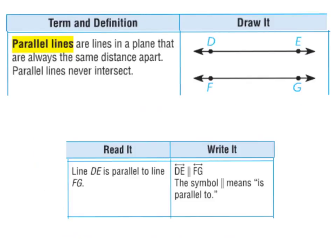The next term is parallel lines. Parallel lines are lines in a plane that are always the same distance apart. Parallel lines never intersect — they never cross. So line DE is parallel to line FG. The symbol for parallel looks like two long lines side by side, meaning 'is parallel to.'